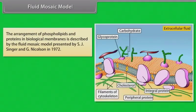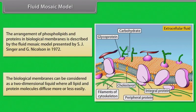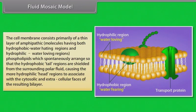Fluid mosaic model: The arrangement of phospholipids and proteins in biological membranes is described by the fluid mosaic model, presented by S.J. Singer and G. Nicholson in 1972. The biological membranes can be considered as a two-dimensional liquid where all lipid and protein molecules diffuse more or less easily.